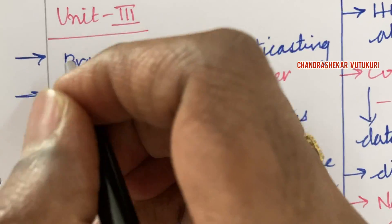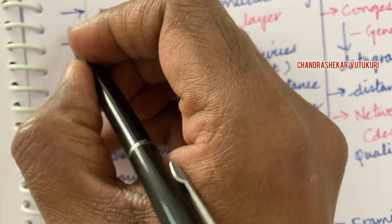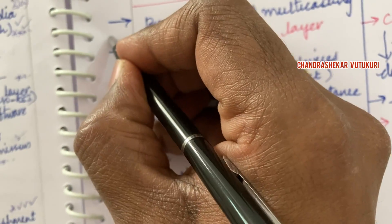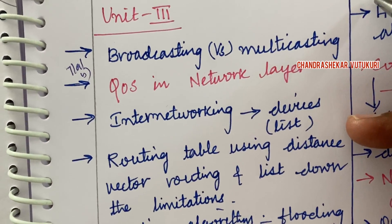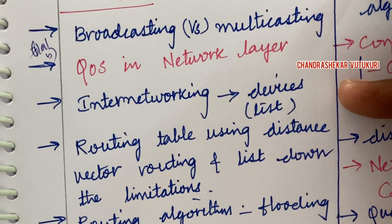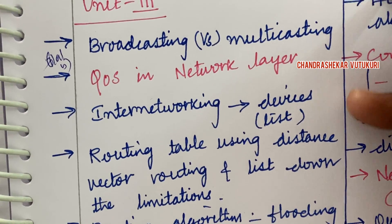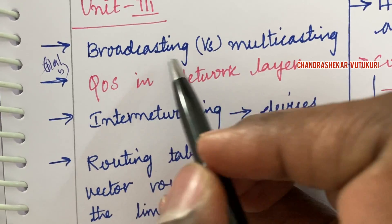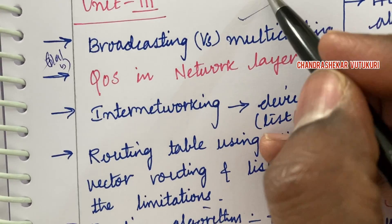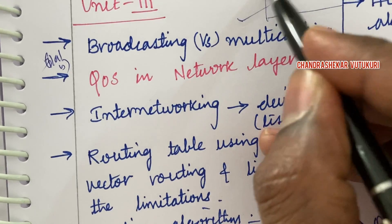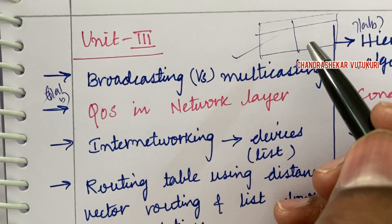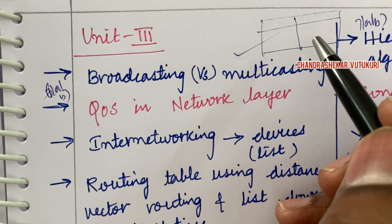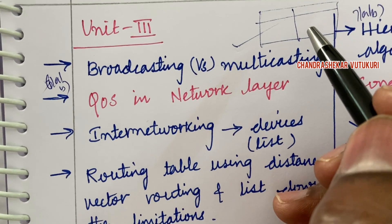I have now taken into consideration Unit 3 — the question numbers here are 6A, 6B, 7A, and 7B. Broadcasting versus multicasting — the differences — you are supposed to work out the differences using a tabular column. If you haven't gone through my video on how to tackle a TD paper to score better marks, I have uploaded a video — please go through my channel.